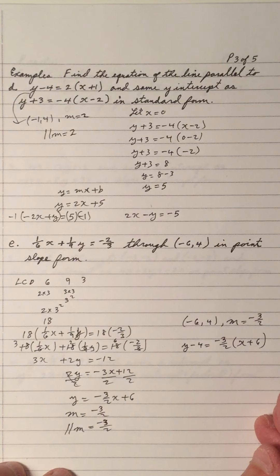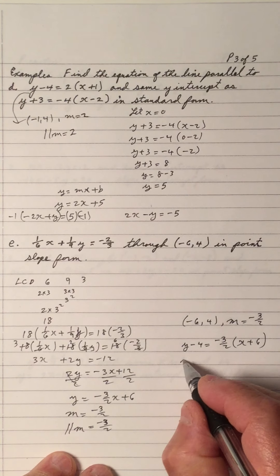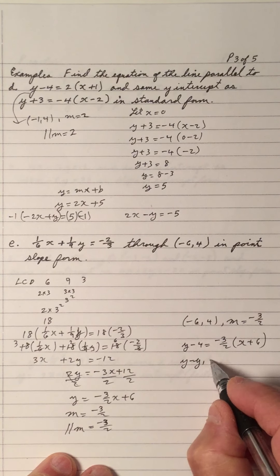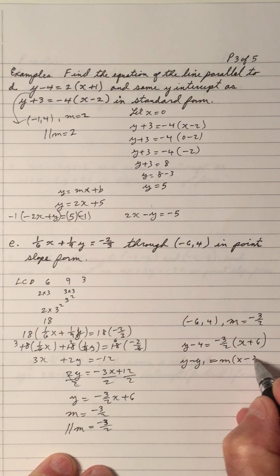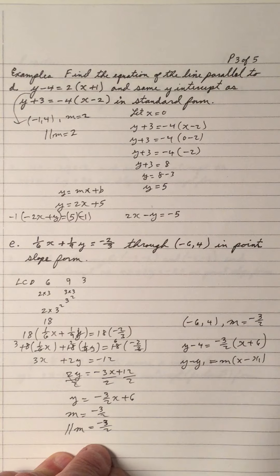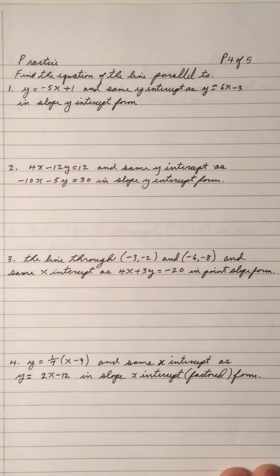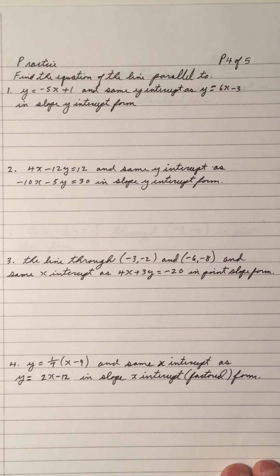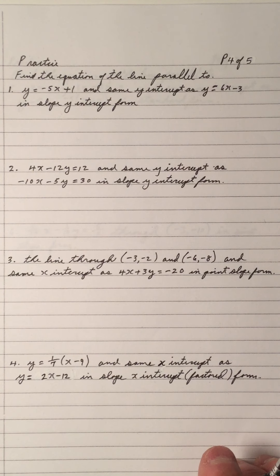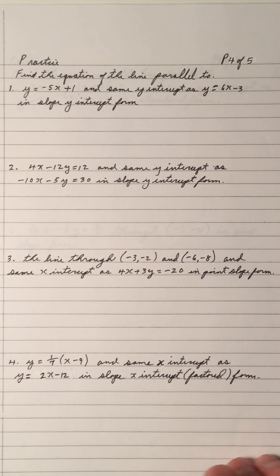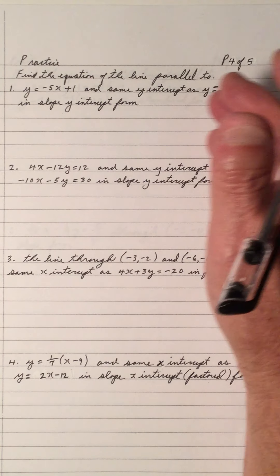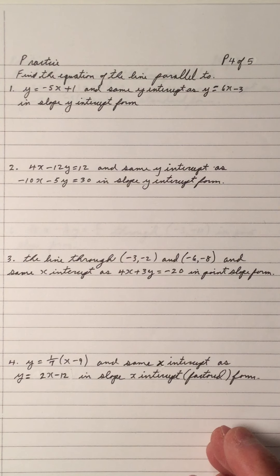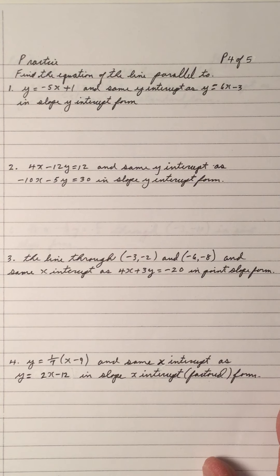That's in the point-slope form, which — just a review — is y minus y1 equals m times x minus x1. Now we have practice problems. You can pause the video and work all of these out, then play it back to check your answers. Do one at a time and see if you're right.